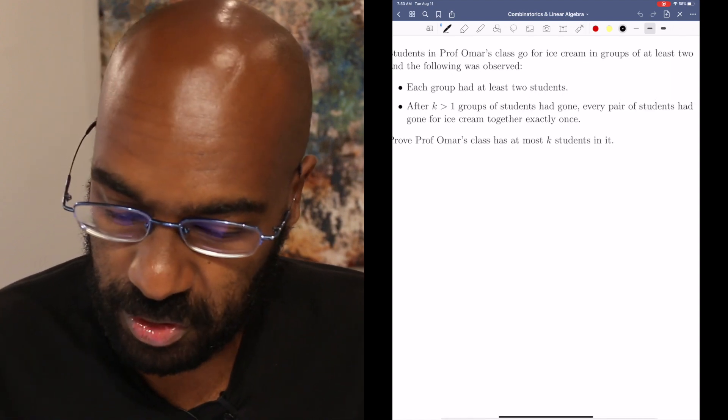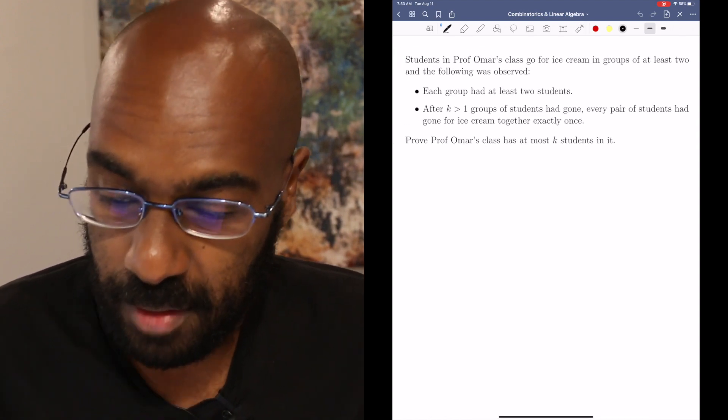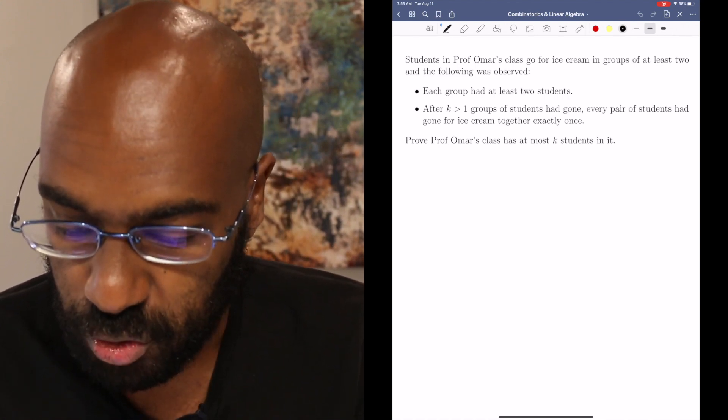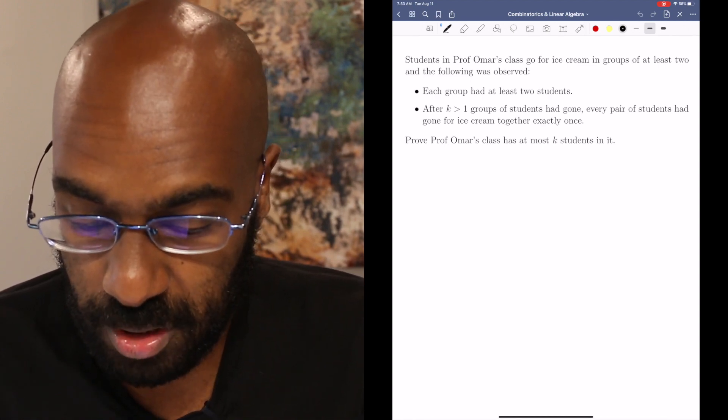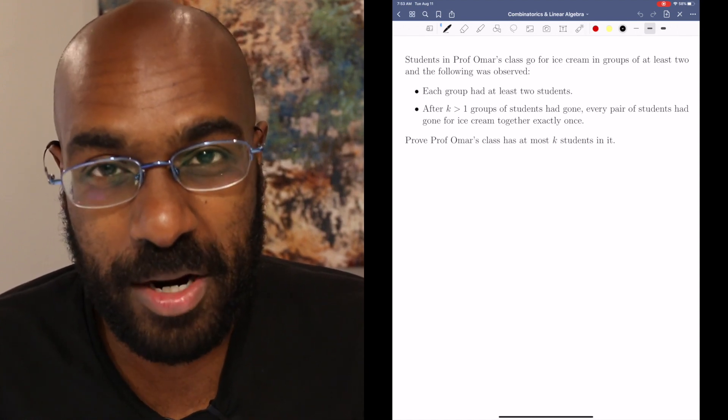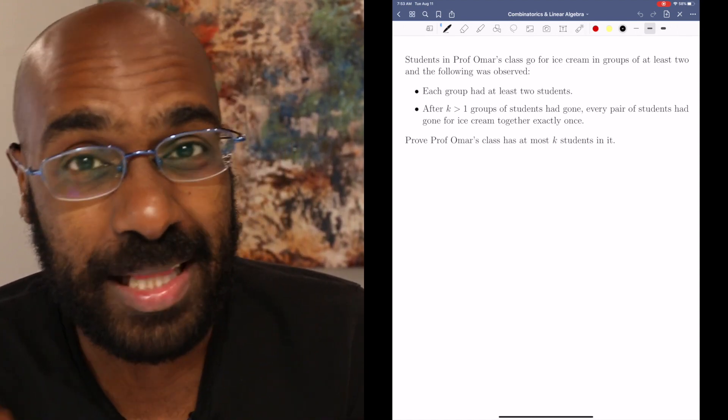So the question states the following. You have students in Prof. Omar's class that go for ice cream in groups, and the groups are groups of at least two, and the following is observed. Each group had at least two students in it, and after a certain number of k groups of students had gone, every pair of students had gone for ice cream together exactly one time.